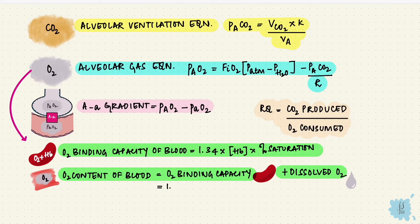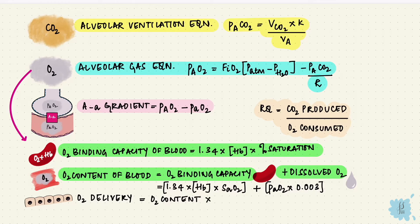That's 1.34 into the hemoglobin concentration into the saturation plus the partial pressure of oxygen into 0.003, that's the solubility of oxygen. The oxygen delivery to the tissues is how much oxygen gets to the tissues, so it's the whole oxygen content of blood into the flow, and that's the cardiac output.